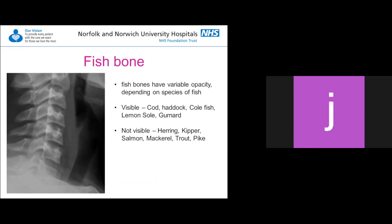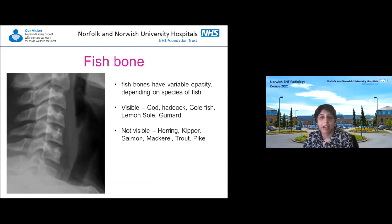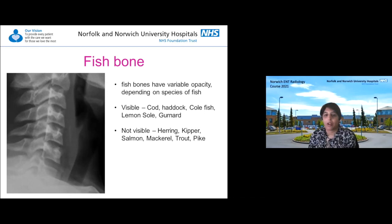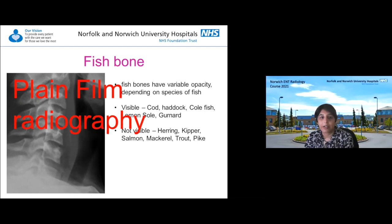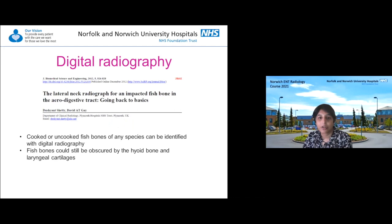Fish bones are the most common reason for requesting a lateral soft tissue x-ray. Fish bones have variable opacity depending on species. The A&E book states visible fish tend to be cod, haddock, coal fish, lemon sole, and gurnard, while herring, kipper, salmon, mackerel, trout, and pike are not visible - but that was with plain film radiography. With digital radiography we can window things much better, and now all fish bones should be visible on a lateral soft tissue x-ray.